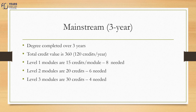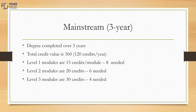Having been selected into the mainstream program, you will complete your degree over three years after having obtained a total of 360 module credits — 120 credits per year. At level one, all modules are worth 15 credits, so you must complete eight first year modules. At level two, all modules are 20 credits, hence the need to complete six second year modules. At level three, all modules are 30 credits, so you will need to complete four third year modules.